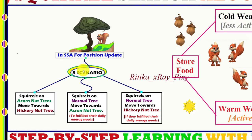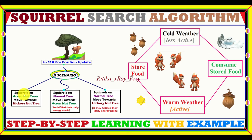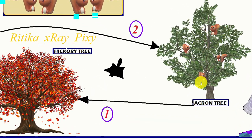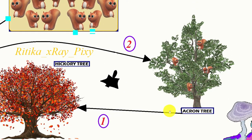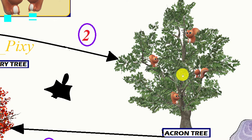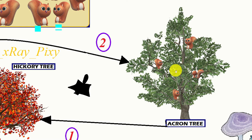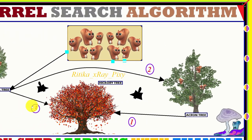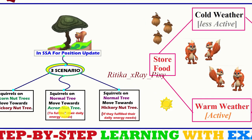Now we will understand the flying squirrel position update process. There are three scenarios for updating squirrel positions in the search space. In the first scenario, squirrels on the acorn nut trees move toward the hickory nut tree. During warm weather they consume acorn nuts, and during cold weather they consume hickory nuts. Once their daily energy requirement is fulfilled at the acorn tree, they move toward the hickory tree.